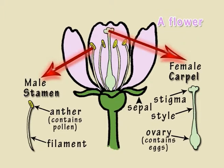Other parts of the flower include the sepal, which protects the flower when it is a bud, and petals, which are often brightly coloured to attract insects to the flower.